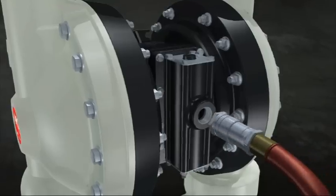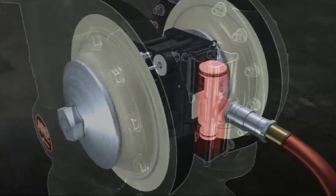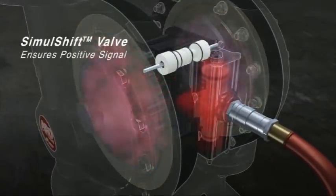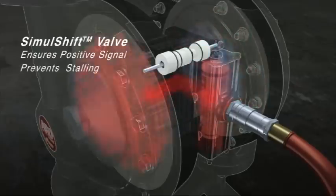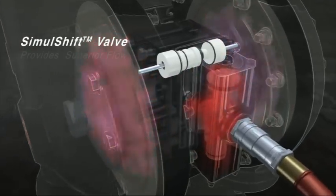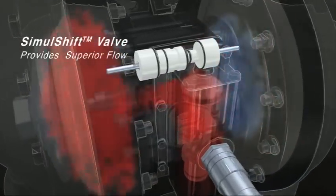As compressed air enters the pump, it pushes the diaphragm against our unique simul-shift valve, which maintains an ultra-positive signal to prevent stalling. The simul-shift valve also assures faster trip-over for continuous flow with minimal pulsation.